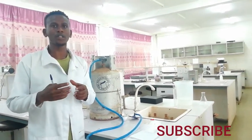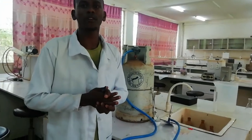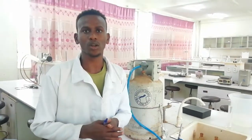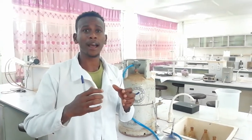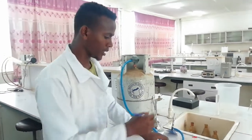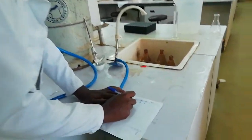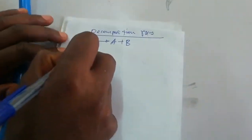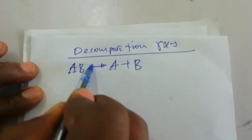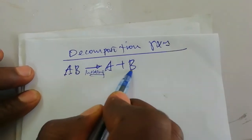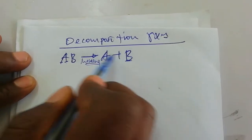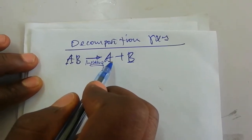In this video we are going to decompose copper sulfate pentahydrate. When we decompose copper sulfate pentahydrate it decomposes into copper sulfate and water molecules. In decomposition reaction we have one reactant, AB, and upon heating it converts into A and B. The reverse is true for combination reaction.